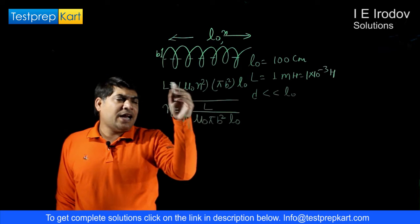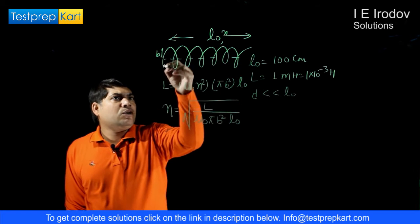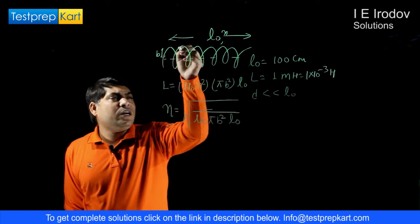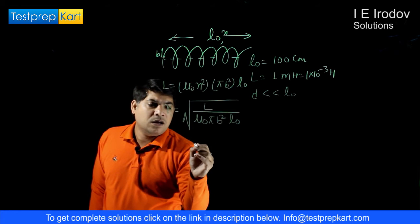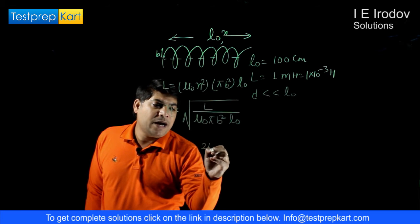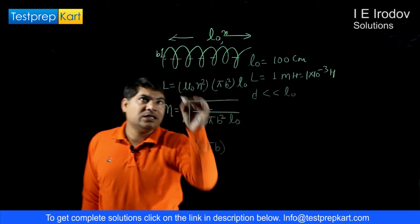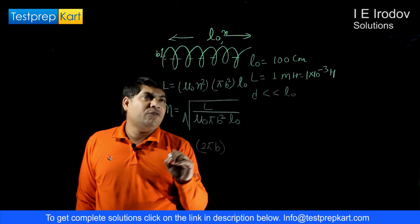If we try to find out total length of wire required, in one turn the wire required is 2πB, the circumference of one circle. This is length of wire required.